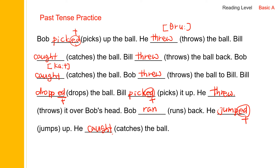I'm going to read the story one more time in past tense: Bob picked up the ball, he threw the ball, Bill caught the ball, Bill threw the ball back, Bob caught the ball, Bob threw the ball to Bill, Bill dropped the ball, Bill picked it up, he threw it over Bob's head, Bob ran back, he jumped up, he caught the ball.